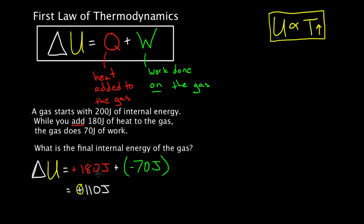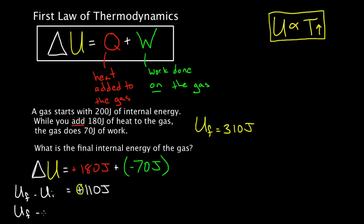But that's not our final answer — the question asks for the final internal energy of the gas, not the change. The change in internal energy is U_final minus U_initial. U_initial is 200 joules, and the change is 110 joules, so U_final equals 200 plus 110, which is 310 joules. That is the final internal energy of the gas.